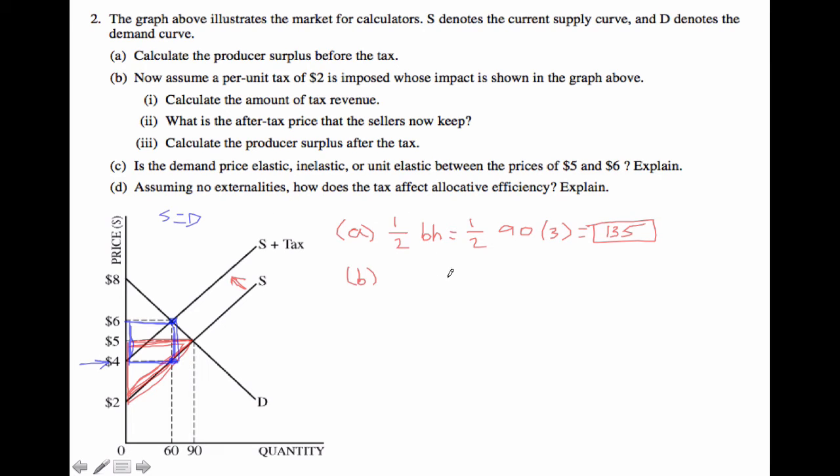And therefore, we've actually answered part A and part B of part 2 because we can calculate the tax revenue by calculating the area of this box, which is 6 minus 4, or 2, times 60. And then we've also gone ahead and figured out the after tax price of sellers, which is $4.